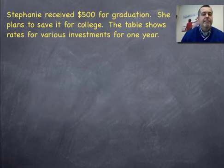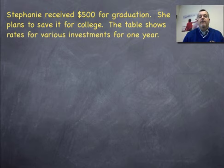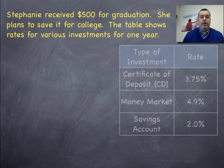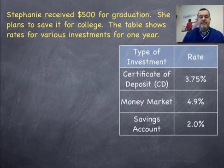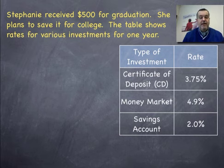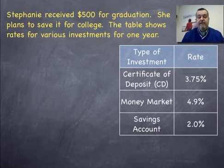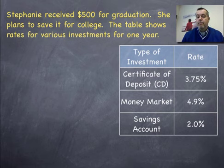Let's take a look at this example. Stephanie received $500 for graduation and plans to save it for college. The table shows rates for various investments for one year. We have three different types of investments: a certificate of deposit, sometimes called a CD; a money market account; and a regular savings account. The CD has an interest rate of 3.75%, the money market has 4.9%, and the savings account is 2%.